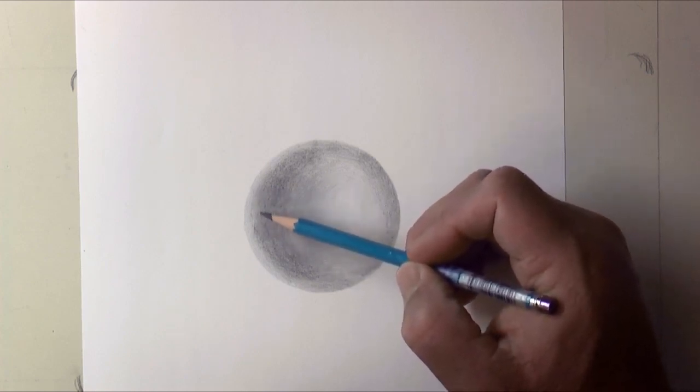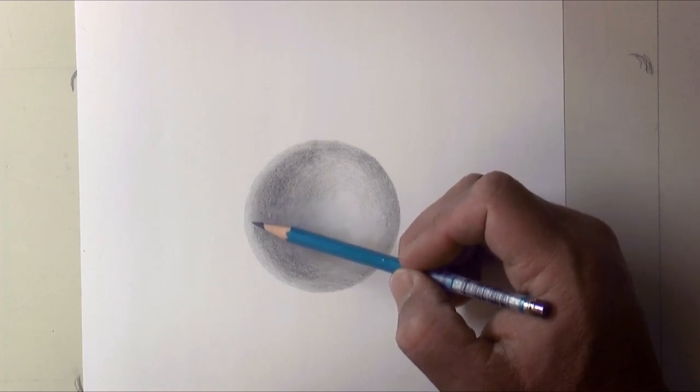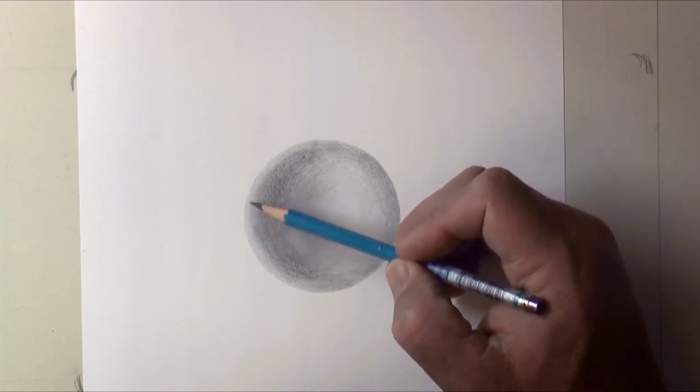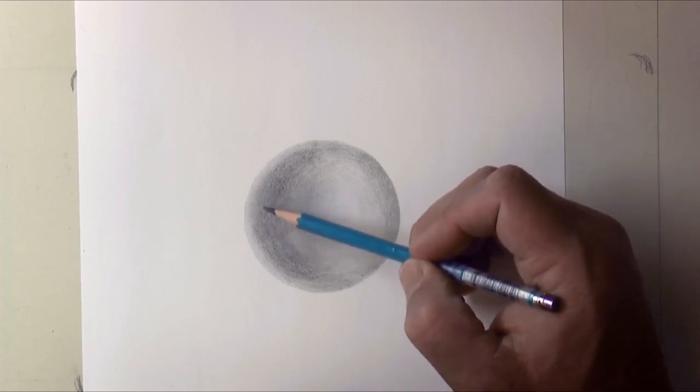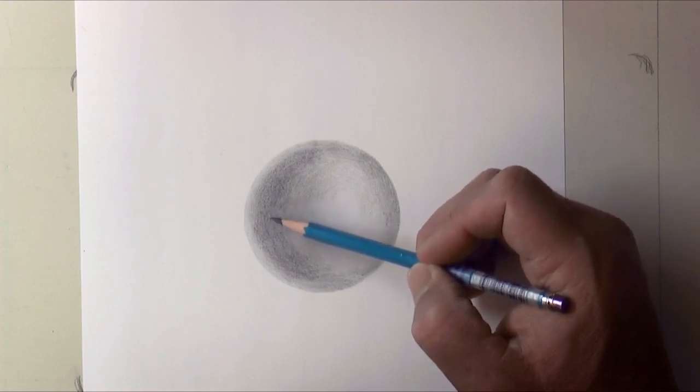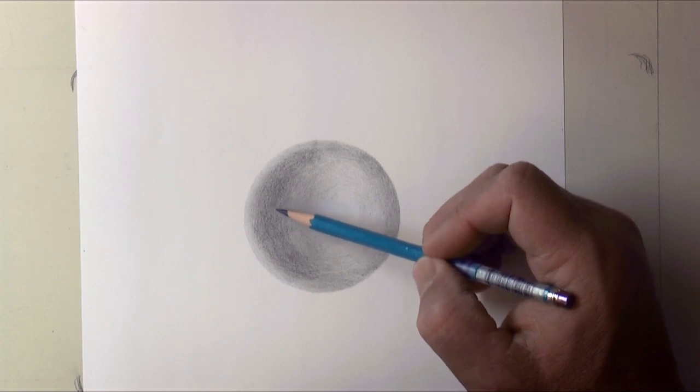It helps you continue to fine tune, know where that pencil tip is actually hitting the paper. It's one reason why it's real good to have a sharp point because you don't want it hitting a little ways away from where you think you're touching the paper. Otherwise, you're going to make another dark mark.